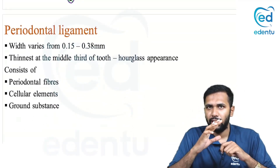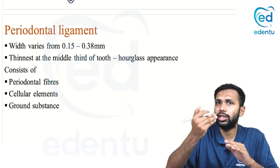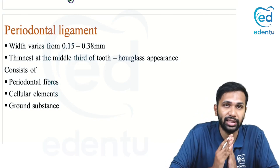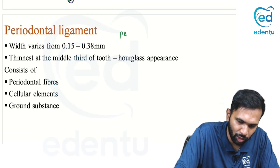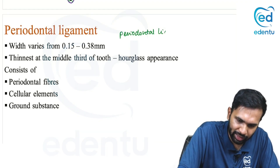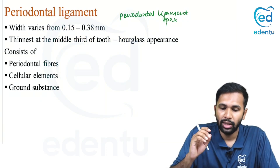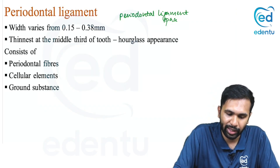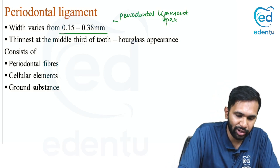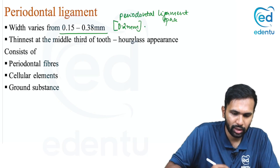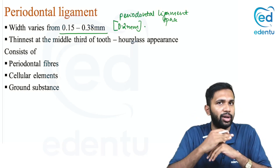If you look at an x-ray — an IOPAR — immediately adjacent to the cementum you see a radiolucent space, which is referred to as the periodontal ligament space. The width of this periodontal ligament space varies from 0.15 to 0.38 mm, with an average width of 0.2 mm.